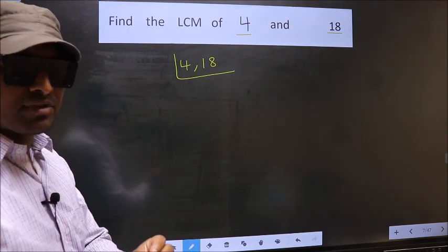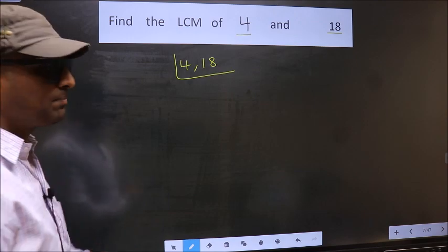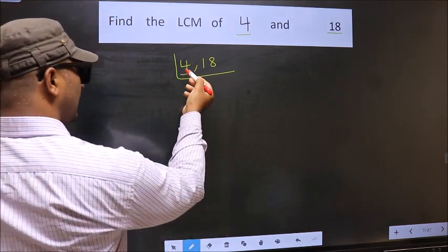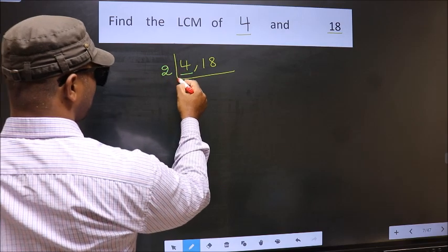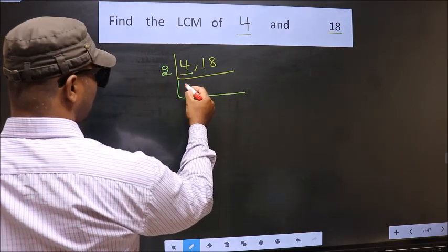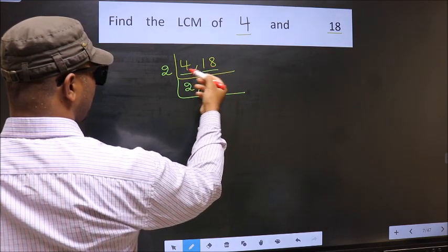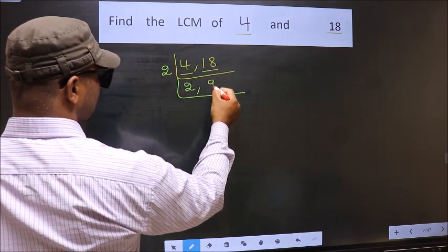Next. Now you should focus on the first number, that is 4 here. 4 is an even number, so you take 2. When do we get 4 in the 2 table? 2 times 2 is 4. Now the other number, 18. When do we get 18 in the 2 table? 2 times 9 is 18.